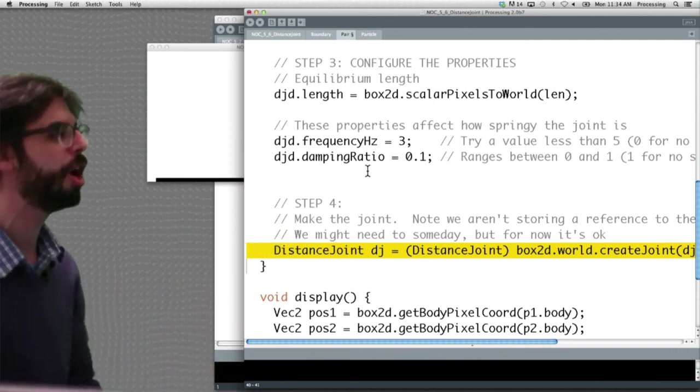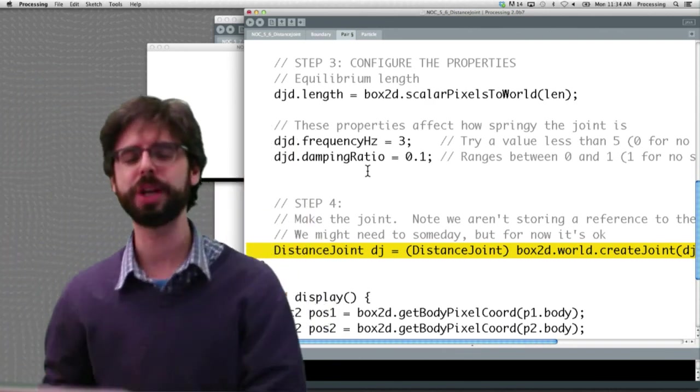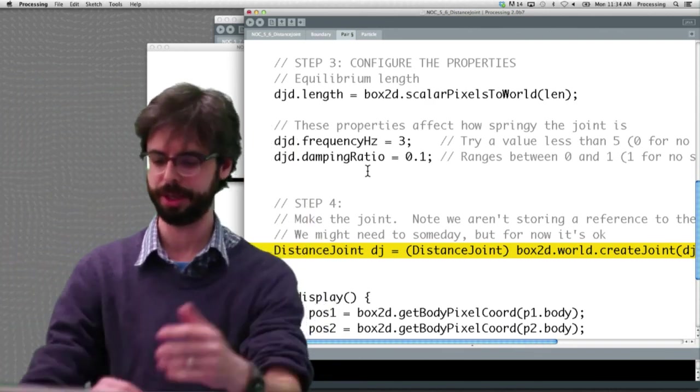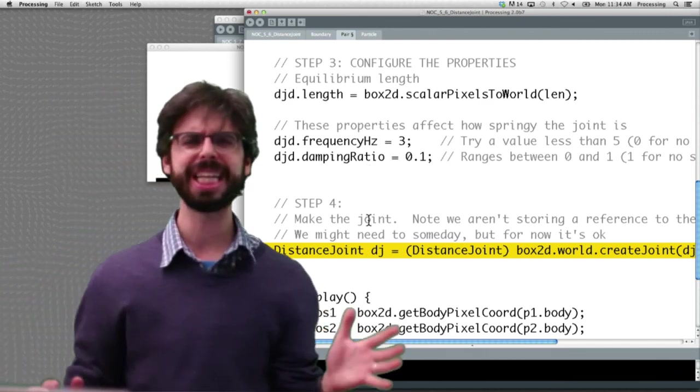And then the very last step is actually create the joint. And you can see there's some gobbledygook code here, but we're calling Box2D.createJoint and passing in the joint definition. And there the joint is done.